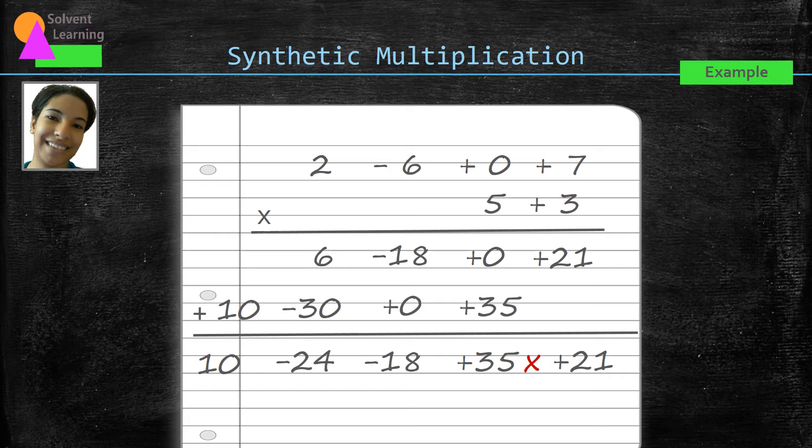Now we move to the negative 18, that'll be our second degree term. So we give it an x squared, then keep moving over, x to the third and x to the fourth. Now we have our final answer, 10x to the fourth minus 24x cubed minus 18x squared plus 35x plus 21.